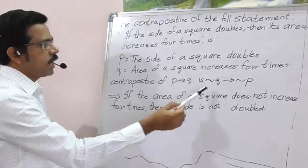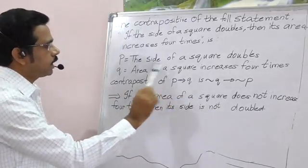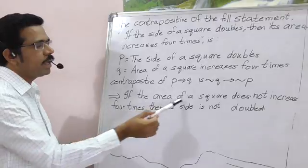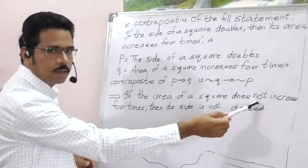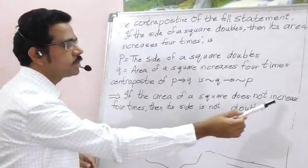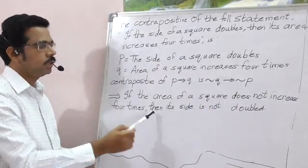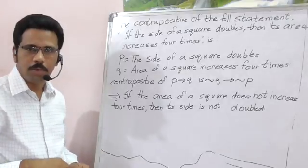Just observe here, first negation Q, second statement, that is if the area of a square does not increase, we are applying negation concept here, right? If the area of a square does not increase 4 times, then its side is not doubled.